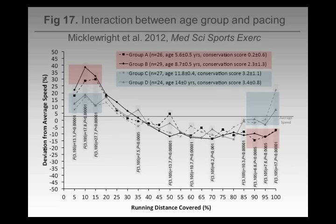It's more evidence that as children get older, they're able to engage in the kind of prospective thought that causes them to decide: I need to take this easy to start off with, because later on there's going to be a cost.